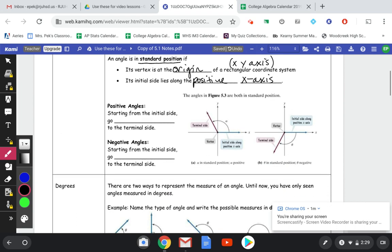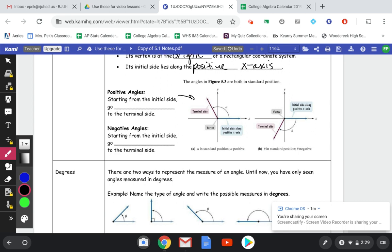So we have positive and negative angles. Positive angles are these ones, and they go from the initial side counterclockwise to the terminal side. And negative angles go clockwise from the initial side to the terminal side.